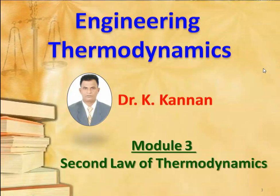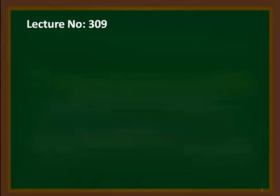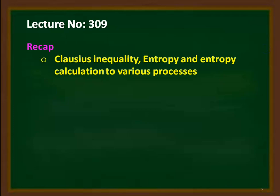We are discussing the second law of thermodynamics, module 3, and this is the ninth lecture on the second law of thermodynamics. We recap from the previous lecture: we discussed the Clausius inequality. Based on that, we can classify whether a process is a reversible cycle, irreversible process, or an impossible process, and we defined entropy and entropy calculations for various processes.